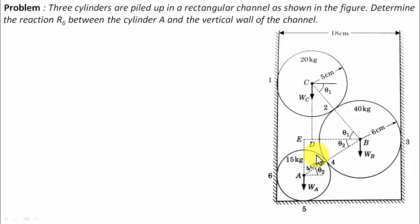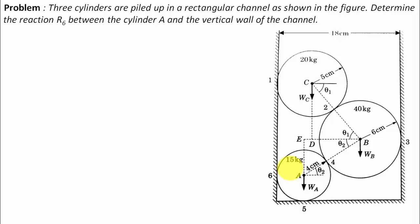Let us initially understand this entire arrangement. There are three cylinders piled up — A, B, C — having masses of 15, 40, and 20 kg respectively. The corresponding weights can be calculated by W = mg, where m represents mass and g represents acceleration due to gravity, which on planet Earth equals 9.81 m/s².